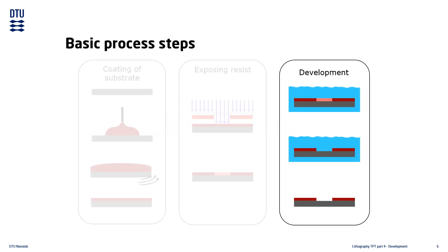The resist is submerged in the development chemical, which removes the unwanted parts of the resist. We are left with a substrate that now has a resist pattern matching the photomask.